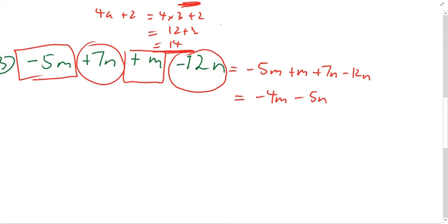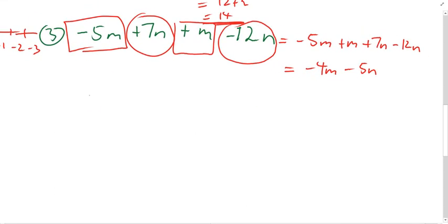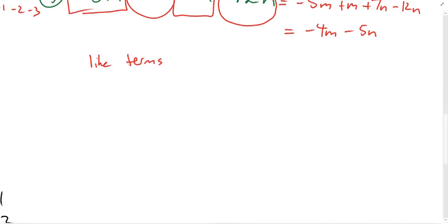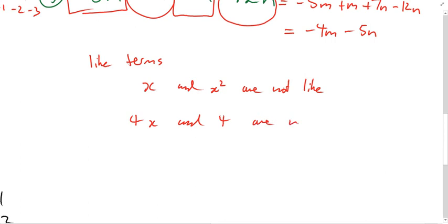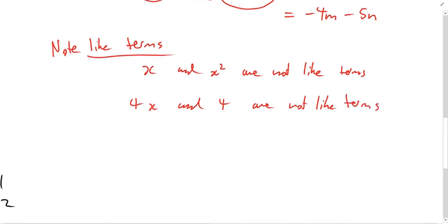One more important point about like terms: x and x squared are not like terms. Four x and four are not like terms. Terms must match exactly to be combined.